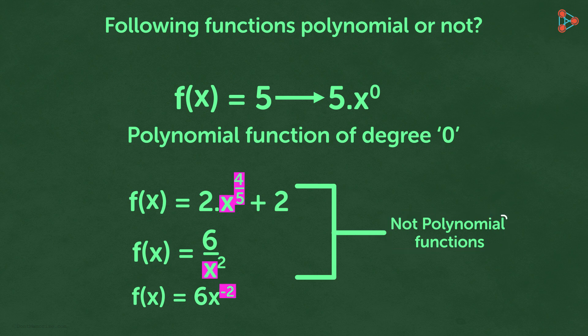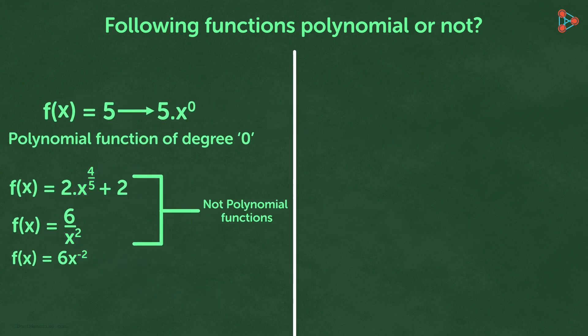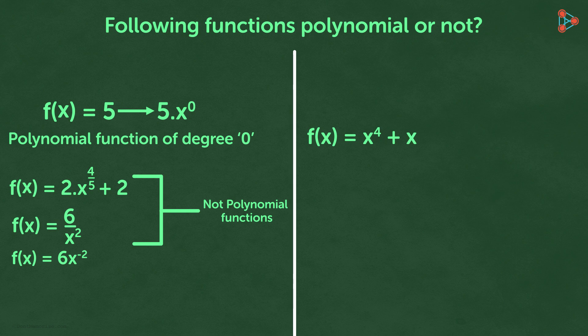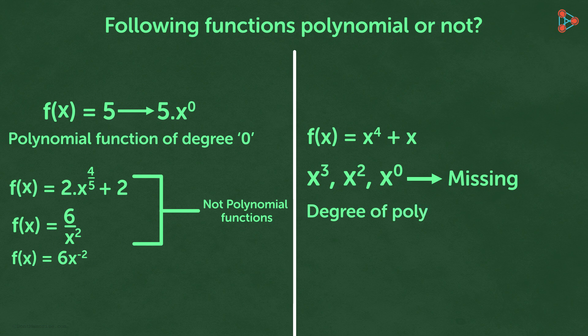How about the function f of x is equal to x raised to 4 plus x? Is this a polynomial function? We notice that the x terms with powers 3, 2, and 0 are missing. Can we say that it is a polynomial function of degree 4? Absolutely! A polynomial function can have some x terms missing.